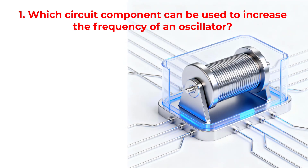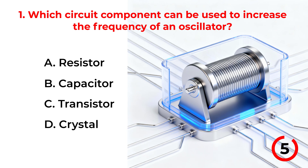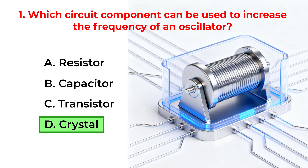Which circuit component can be used to increase the frequency of an oscillator? A. Resistor. B. Capacitor. C. Transistor. D. Crystal. The correct answer is Option D: Crystal.